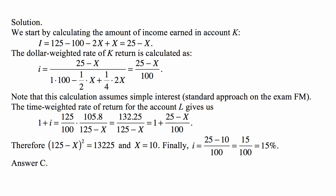If we just calculate everything that is there, that's 125 over 100, which is 1.25, and then multiplied by 105.8 gives us 132.25 divided by the remaining part, which is 125 minus X. We can write this as 1 plus 25 minus X over 100, because we know it has to equal 1 plus the dollar-weighted rate of return earned on account K. Therefore, 125 minus X squared equals 13225, and X turns out to be 10. And I equals 25 minus 10 over 100, which is 15 over 100, or 15%, which is answer C.